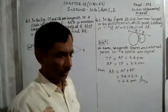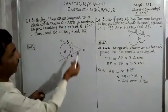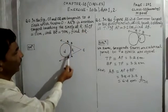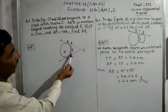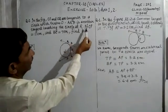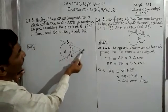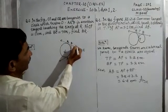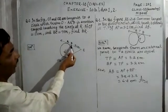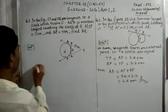Now look at question number 2. In the figure, CP and CQ are tangents to a circle with center O. ARV is another tangent touching the circle at point R. If CP equals 11 centimeters and BC equals 7 centimeters, find the length of BR. We apply the same theorem: tangents from an external point to a circle are equal.